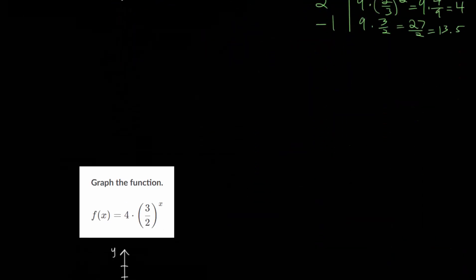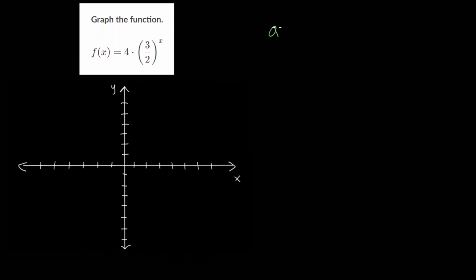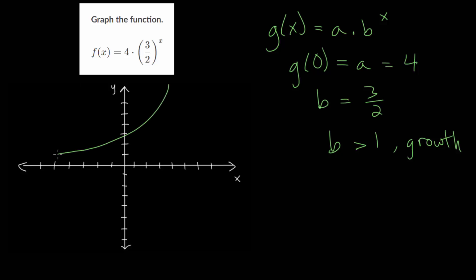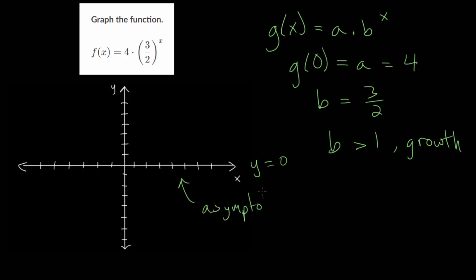Let's do one more problem. It's useful to compare it to the general formula to get a feel for what the function will look like. Plugging in x = 0, we get our a value of 4, since (3/2)^0 = 1. Our base is 3/2, the number raised to the x power. Since our base is greater than 1, we're dealing with exponential growth — the function moves upward as x increases. Since we're not shifting up or down, y = 0 is again our asymptote.